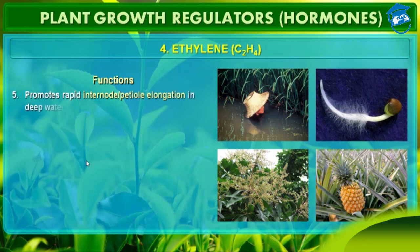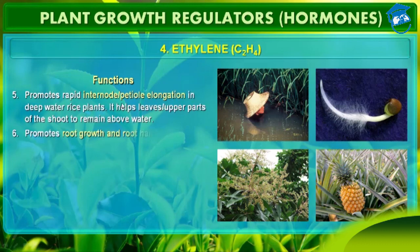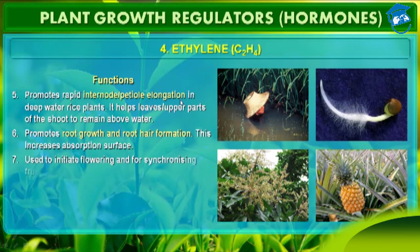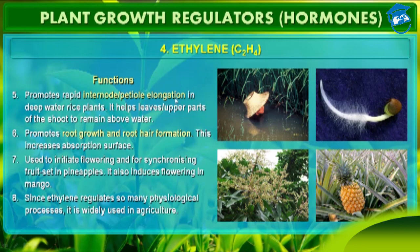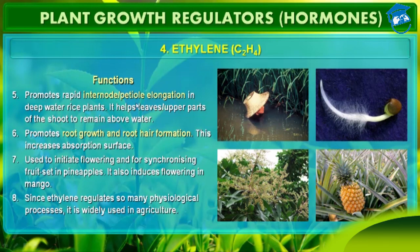Ethylene is widely used in agriculture. It promotes rapid internode and petiole elongation — petiole is the stalk of a leaf, and internode is the distance between two nodes, which are the places from where leaves arise. Ethylene promotes rapid internode and petiole elongation in deep water rice plants, helping leaf and upper parts of the shoot to remain above water.